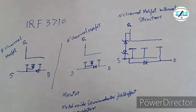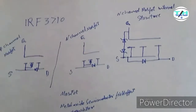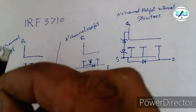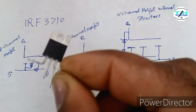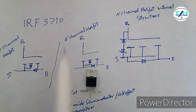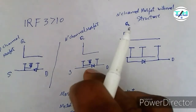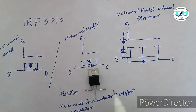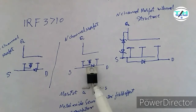Subscribe to the channel and press the bell icon so you can get notifications of upcoming videos. This N-channel MOSFET is available in the IRF series. This is the N-channel MOSFET. It has three terminals: source, drain, and gate. N-channel MOSFETs are available in the market in the IRF series.